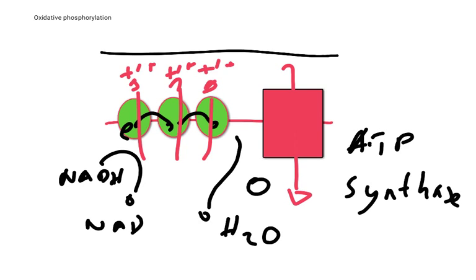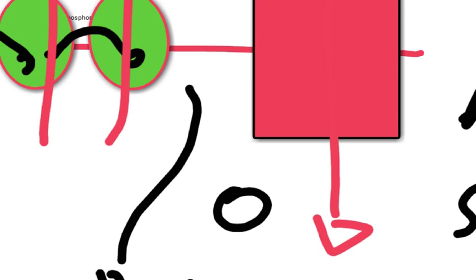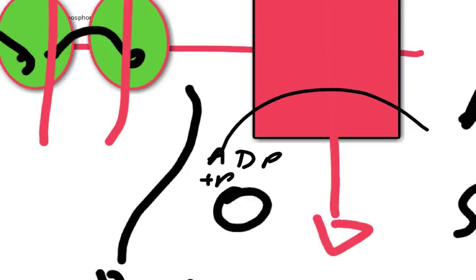Now, synthase means to make. So, here we've got an enzyme that makes ATP. And it makes it, in a fashion, it rotates. And it uses the hydrogen ion gradient to drive the rotation of part of the enzyme, which then takes ADP and adds phosphate to it to make ATP.